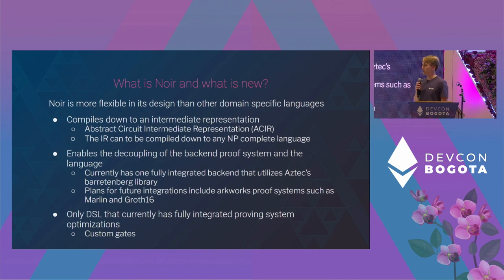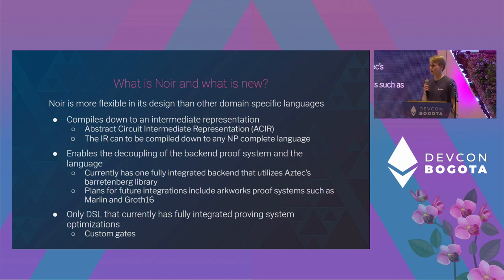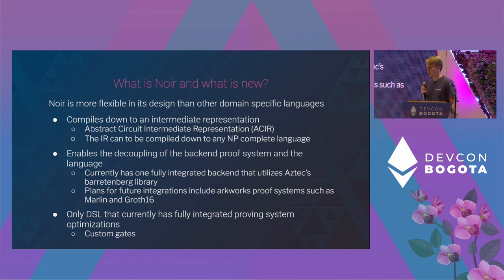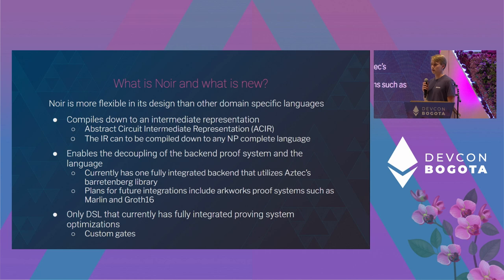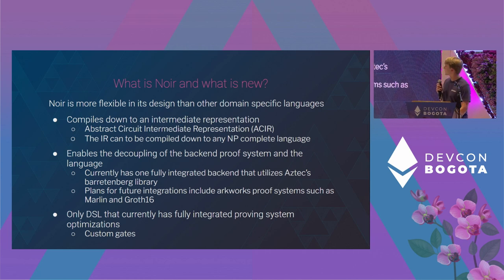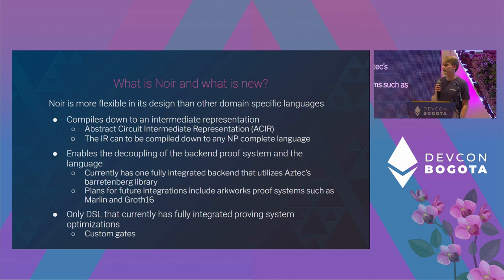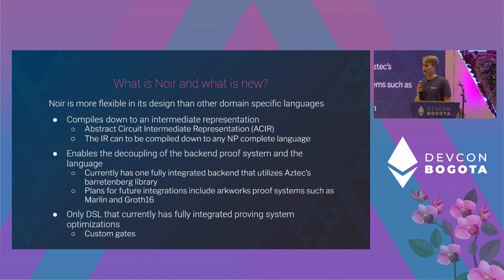First I want to talk about what makes Noir unique. Noir aims to be more flexible in its design than other domain-specific languages that currently exist. Rather than compiling to a specific NP-complete language, we compile down to an intermediate representation. We call this the Abstract Circuit Intermediate Representation, or ACIR, as I'll refer to it throughout this talk. This IR can then be compiled down to a rank-one constraint system or Plonkish languages, whichever you choose.